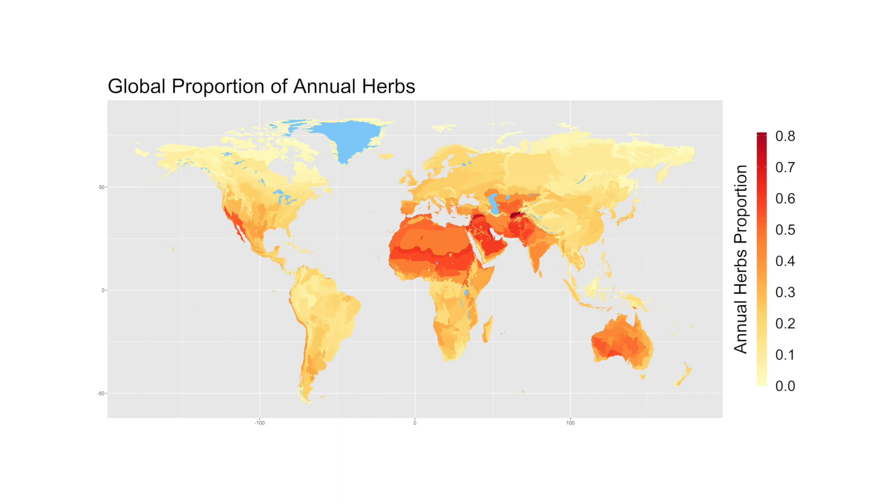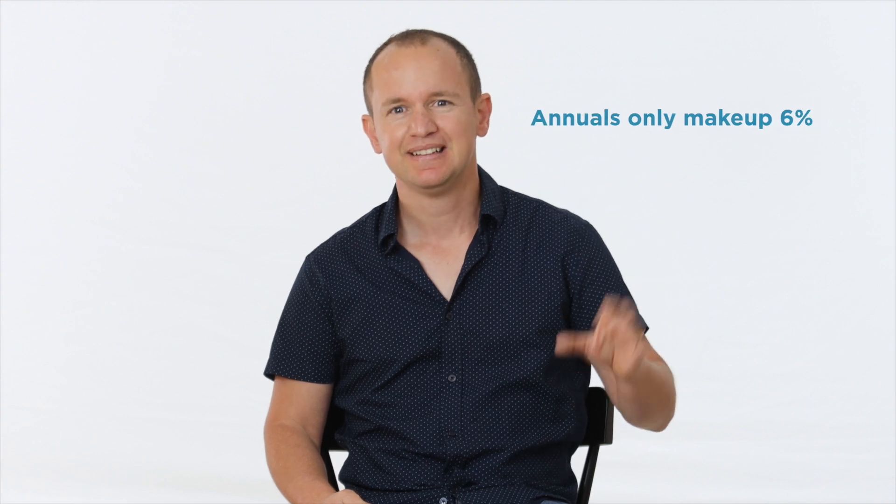We can classify plants into annual plants, living one year only, versus perennial plants, living many years. In Israel, for example, half of the plants are annuals and half are perennials. But worldwide, perennials are the majority — annuals are only 6%.